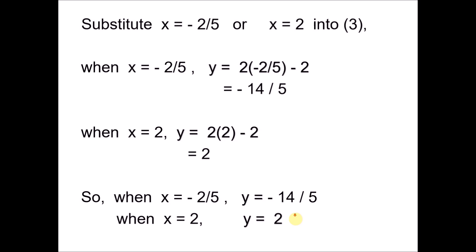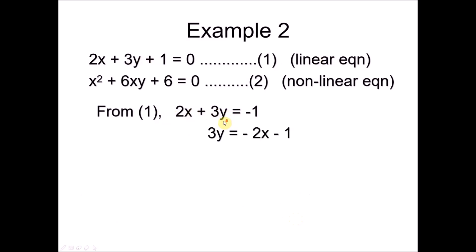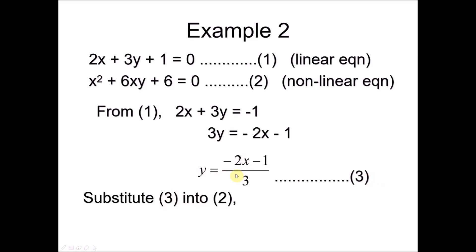For Example 2, we label equation 1 and equation 2. Equation 1 is linear and equation 2 is nonlinear. Always start from the linear equation. We take one variable as the subject — moving x and then 3 to the other side gives y equals negative 2x minus 1 over 3. We label this as equation 3 and substitute it into the nonlinear equation 2.